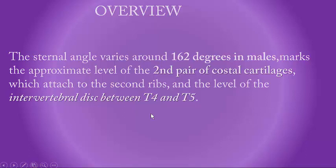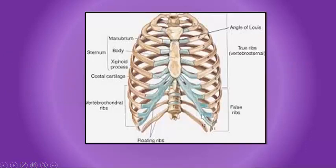The manubrium makes an angle with the body of sternum at 62.62 degrees in males. The sternal angle of Lewis is situated at the level of the second pair of costal cartilage, and posteriorly at the level of the intervertebral disc between T4 and T5. Here we can look at the thoracic cage, the sternal angle of Lewis, the first rib, and the second rib.